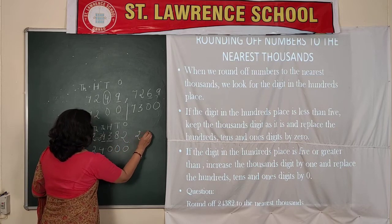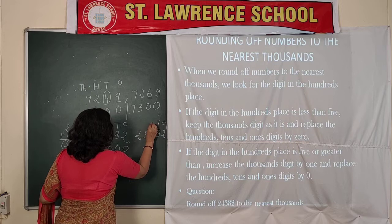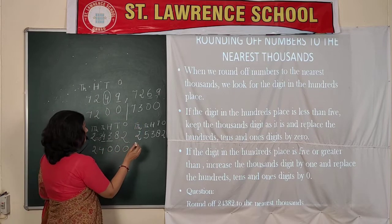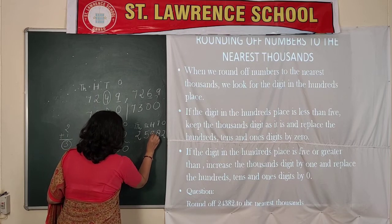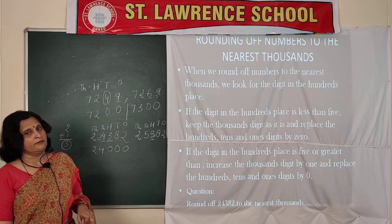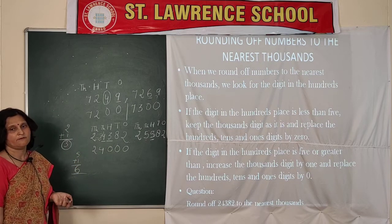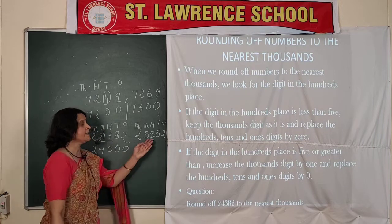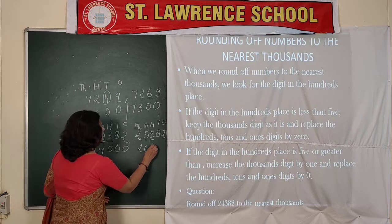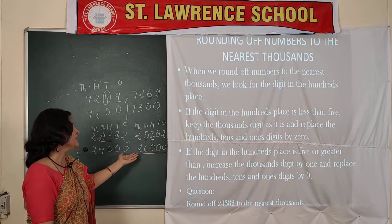The other example is 25,382. Here we again look at the digit on the hundreds place, which is 5. Since it is 5 — greater than or equal to 5 — we increase the thousands digit by 1: 5 plus 1 equals 6. The digits on the hundreds, tens, and ones places are replaced by 0. So 25,382 is near about 26,000.